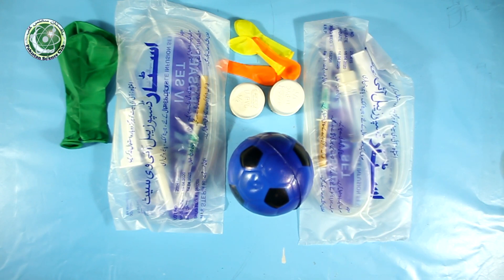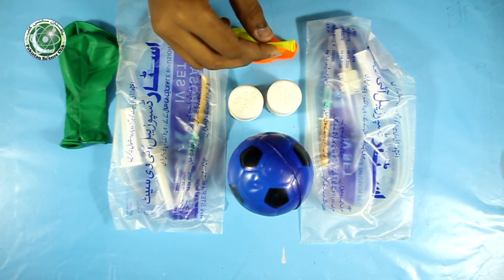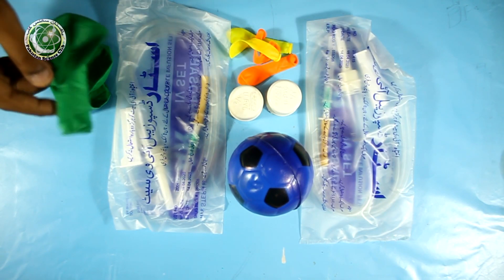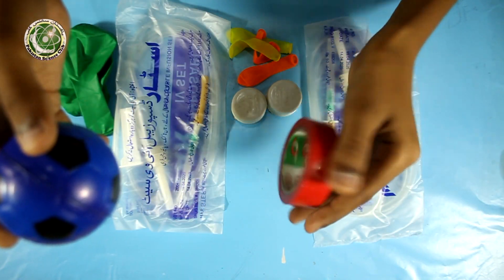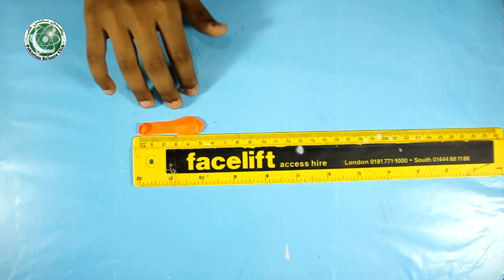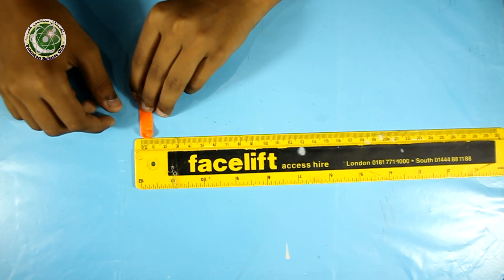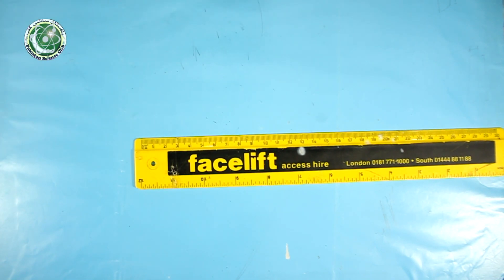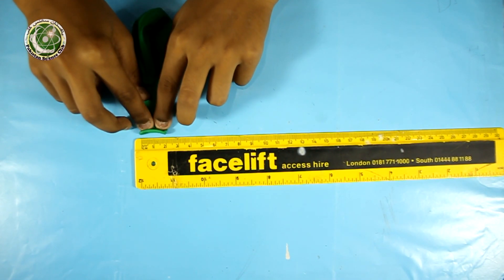The things we need to make a working model of heart are drip pipe, two PVC pipe caps, some small balloons, some big balloons, stress ball or physio ball, and electrical tape. The measurement of small balloon in length is 5 cm and the collar of the balloon is 1 cm. The measurement of big balloon is 10 cm, collar of big balloon is 2 cm.